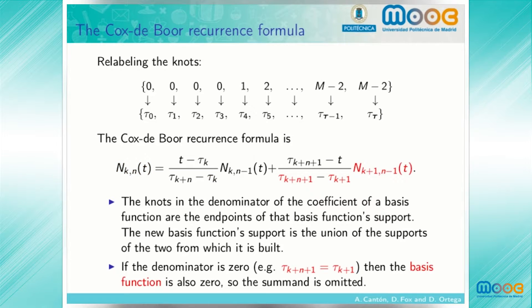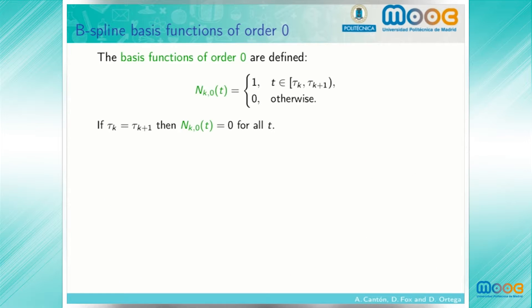If the denominator is 0 — that is, the two knots appearing in the denominator are the same — then the basis function is also 0, and the term is omitted. The basis functions of order 0 are defined to be 1 when t takes a value between the knot tau sub k and the knot tau sub k plus 1, and 0 otherwise. If the two consecutive knots coincide, then the basis function is defined to be 0 for all time.